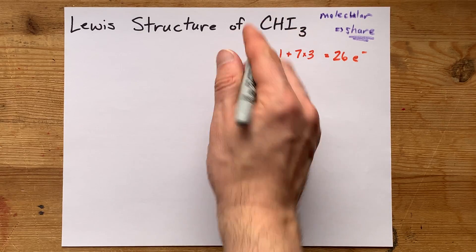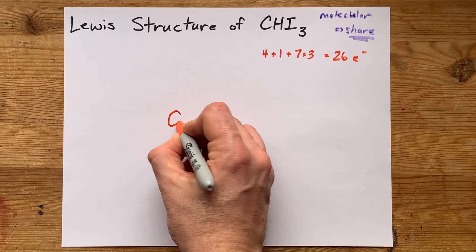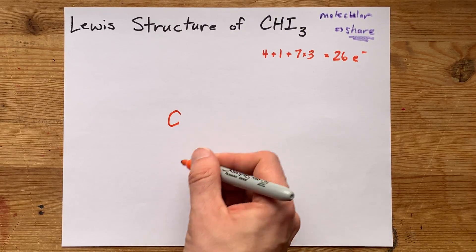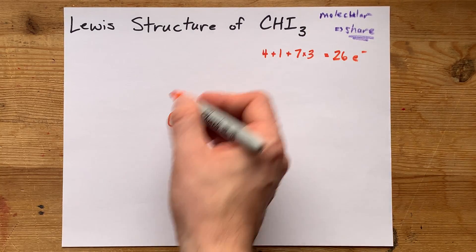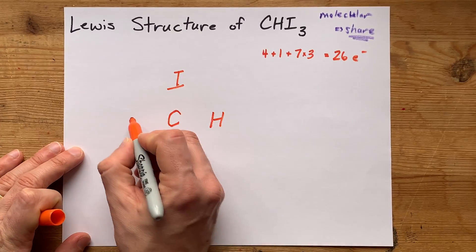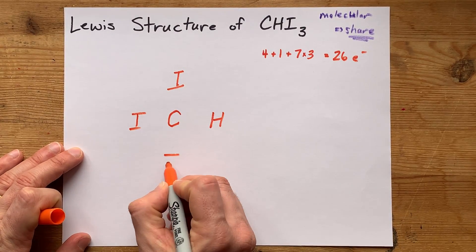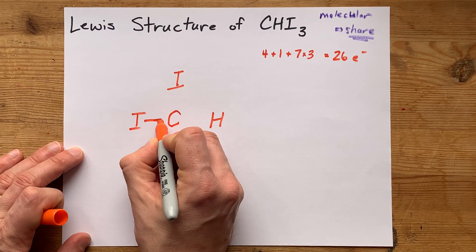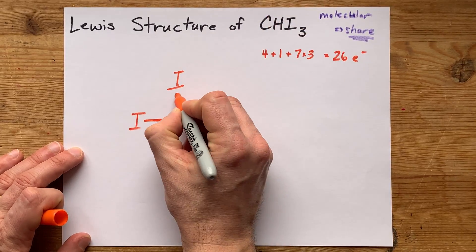Now, of these atoms, carbon can make the most bonds. Carbon likes having four bonds. Hydrogen likes having one bond, and most often iodine will have one bond as well. But let me just surround my central atom, the thing that can bond the most, with all of the atoms that it says are bonded to it here.